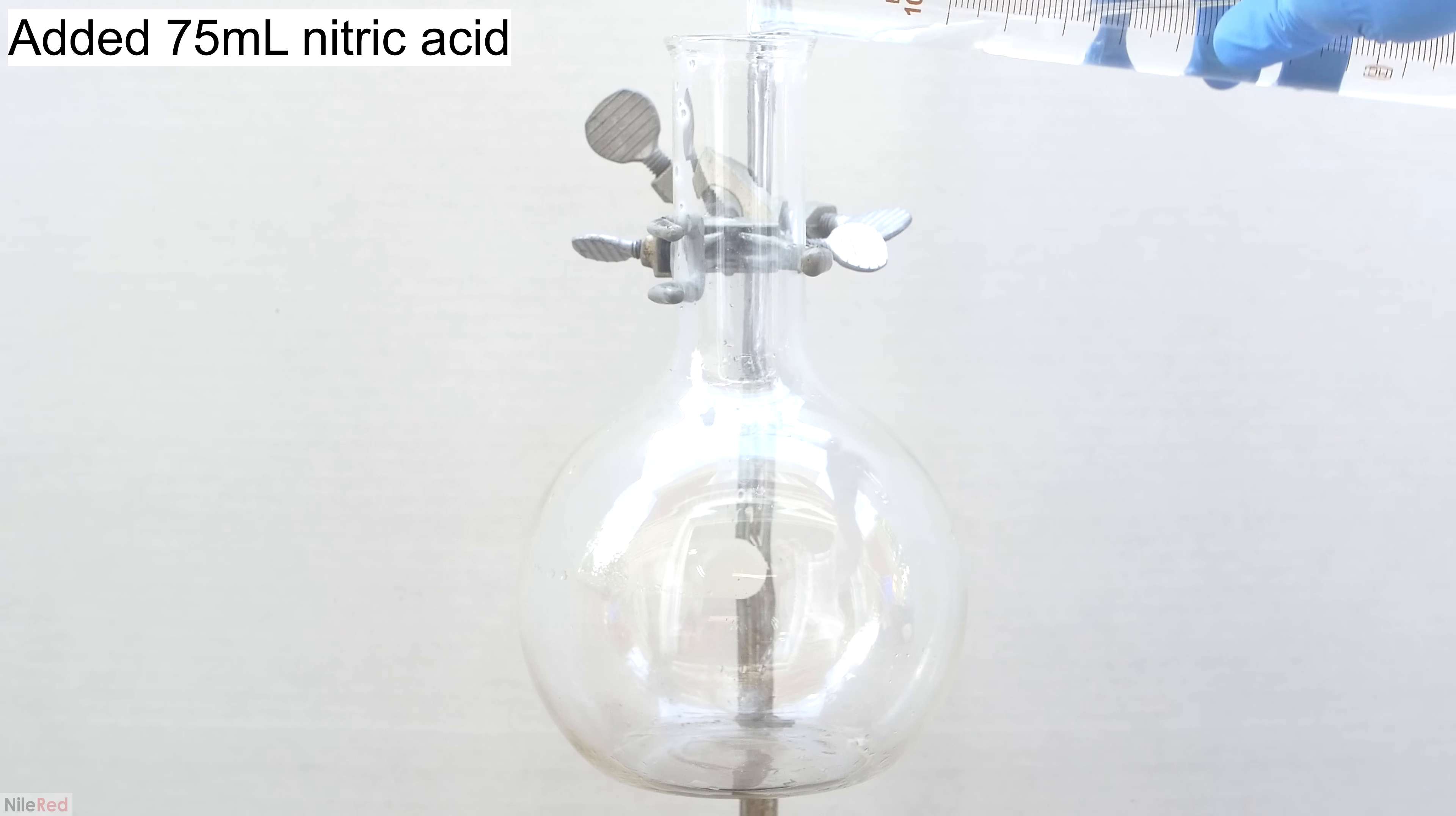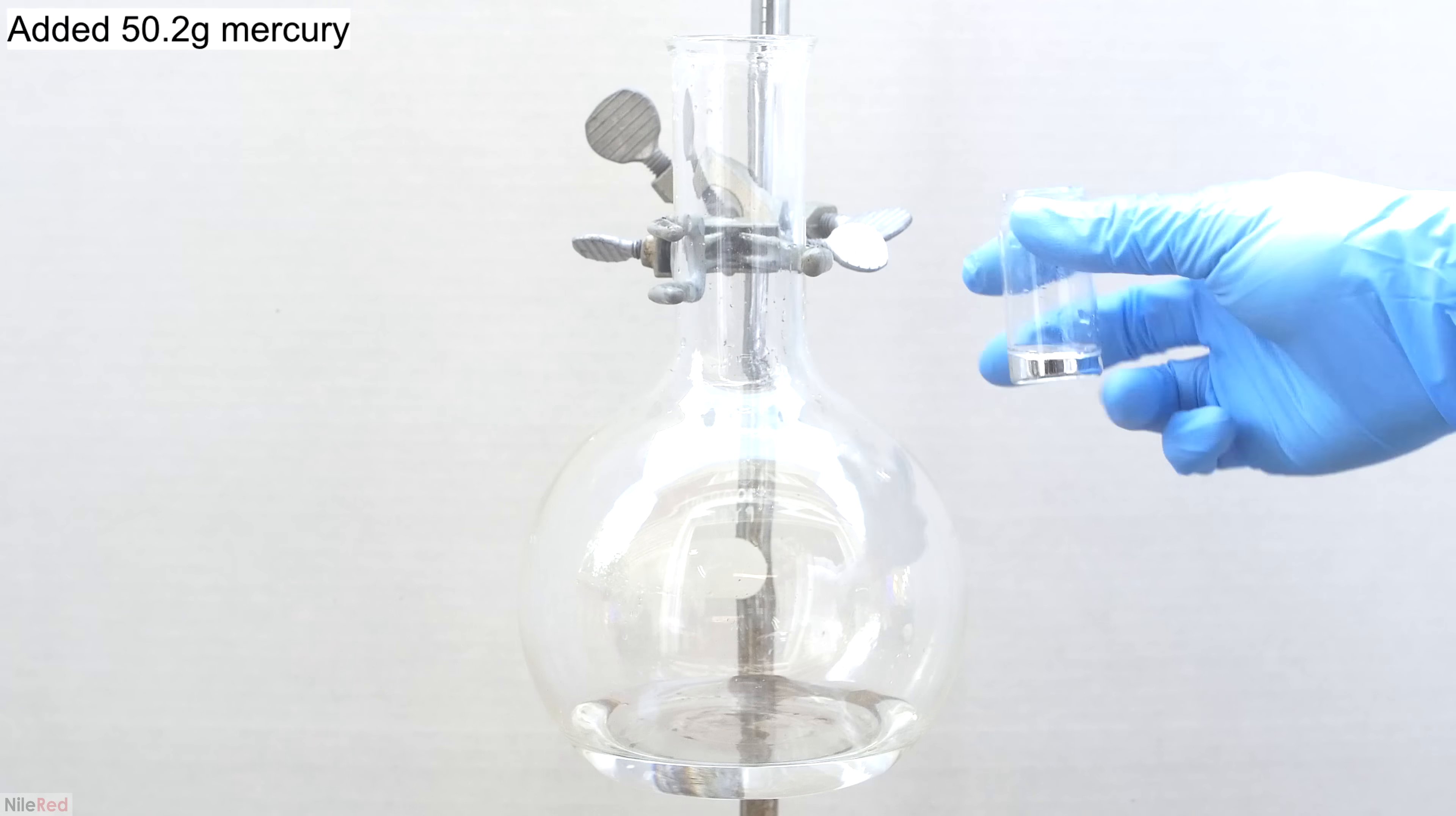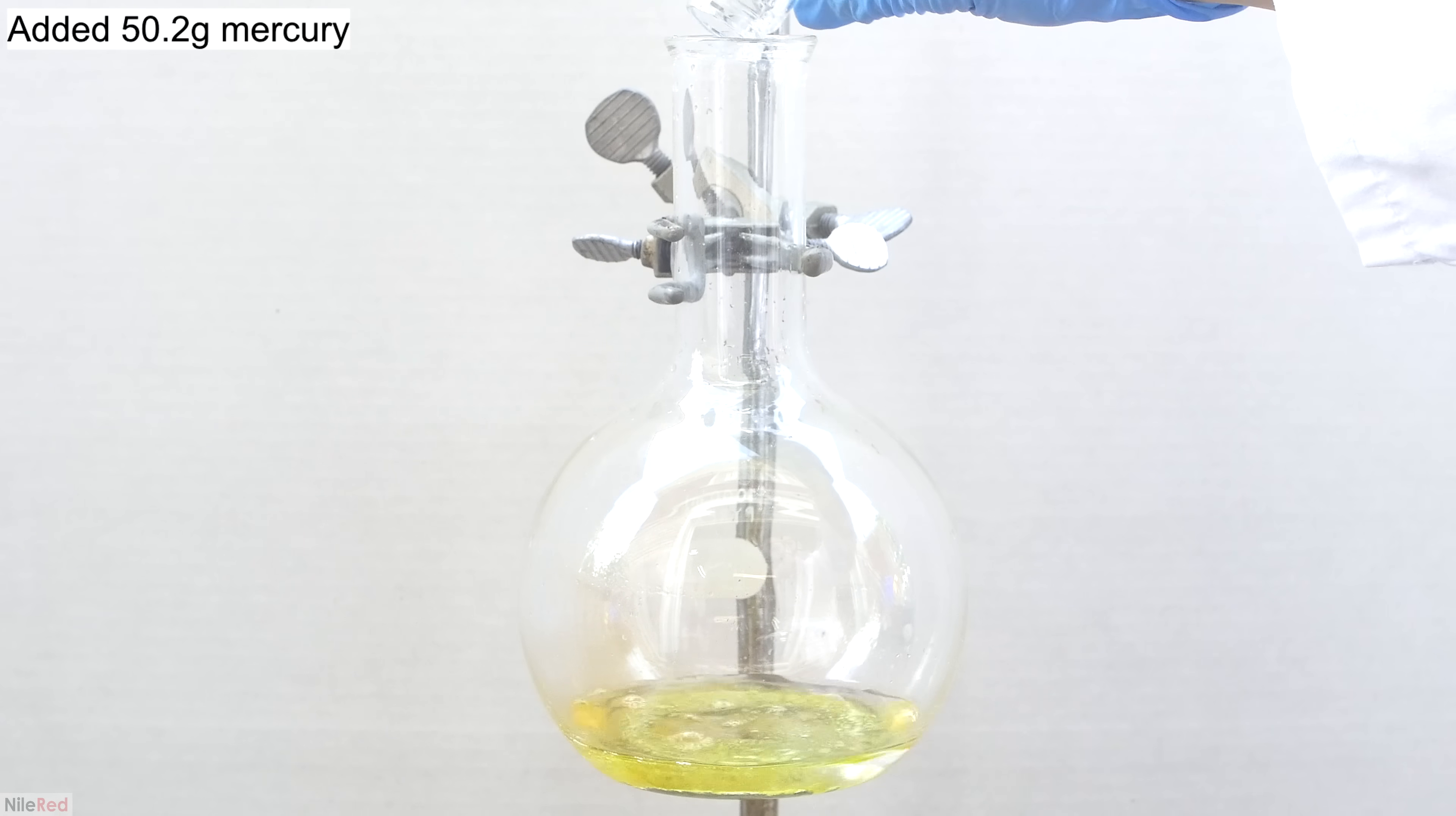To start things off, I added 75 milliliters of concentrated nitric acid to a 1 liter boiling flask. Directly into the nitric acid, I then poured in 50.2 grams of elemental mercury.